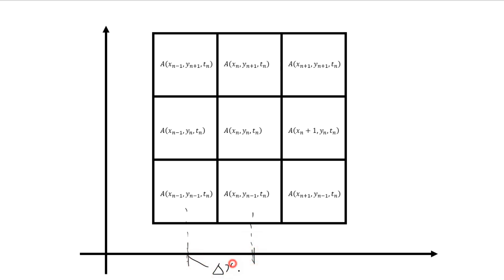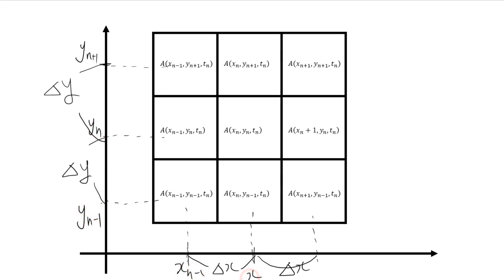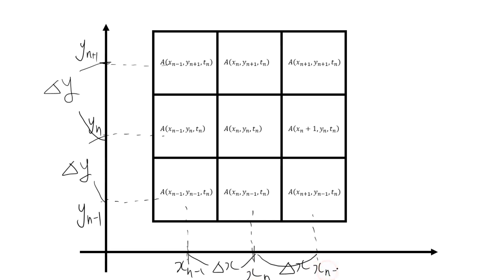This is delta x, and the same length, delta x. Delta y — this is delta y, and this is delta y. And this one is yn plus 1, and yn minus 1. Xn minus 1 and xn plus 1.